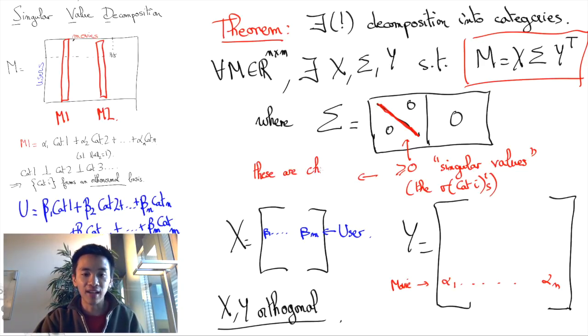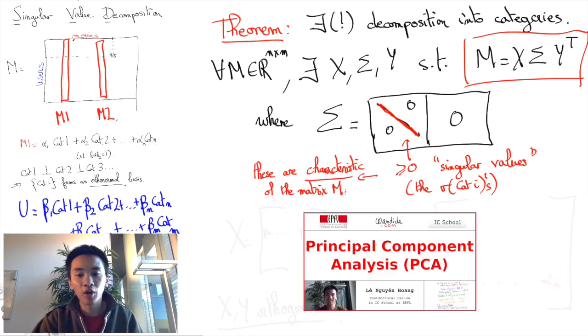The diagonal non-negative entries of Sigma are called singular values, and they are fundamental and intrinsic information about the initial matrix. If you've watched my previous video on principal component analysis, you may have noticed similarities between SVD and PCA. This is no accident.